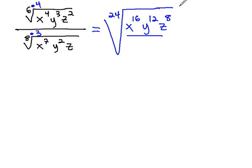In the denominator, we are multiplying by 3. So we have x to the 7 times 3 or 21, y to the 3 times 2 or 6, and z to the 1 times 3, which is 3.